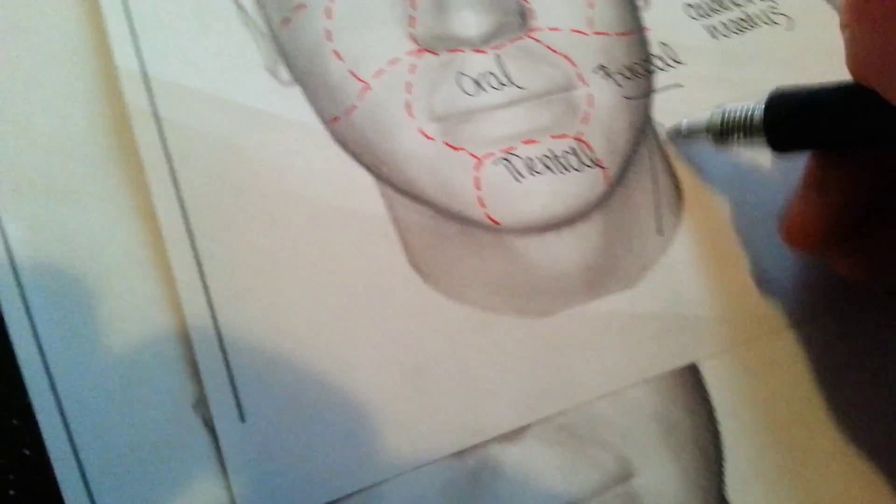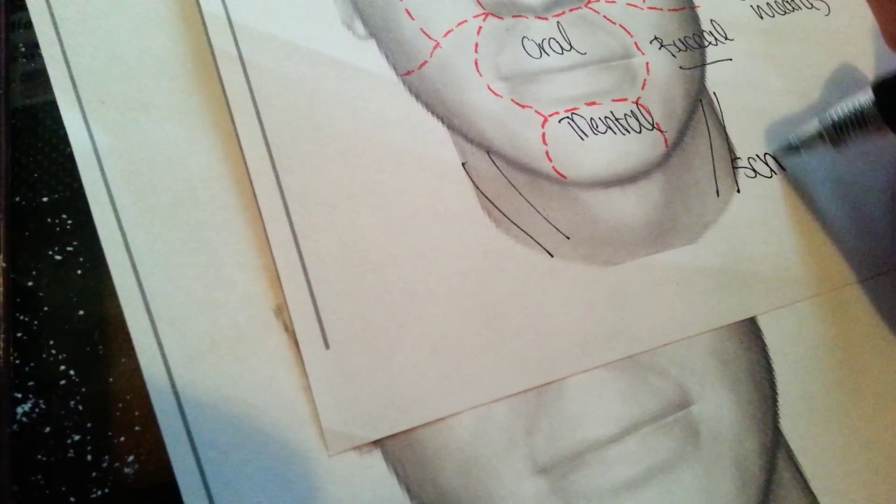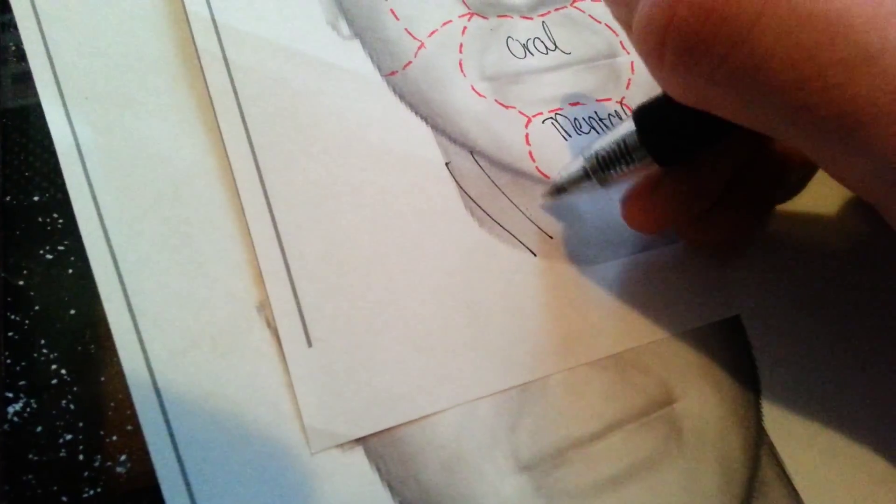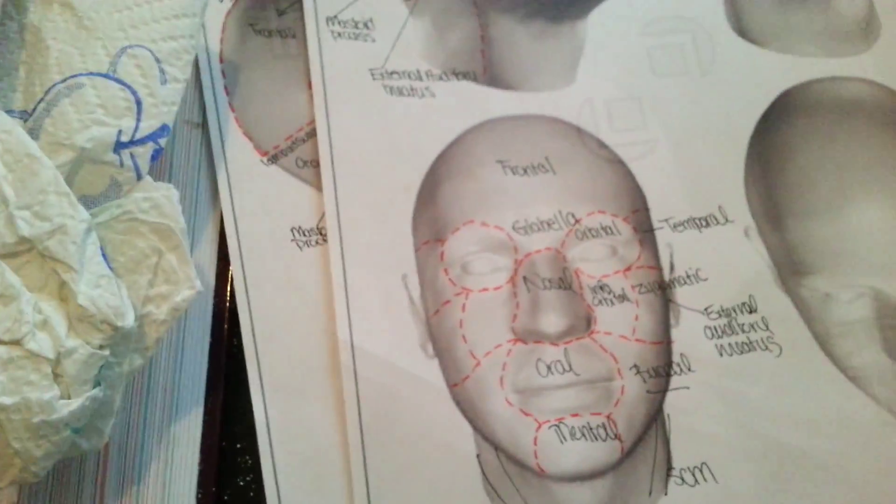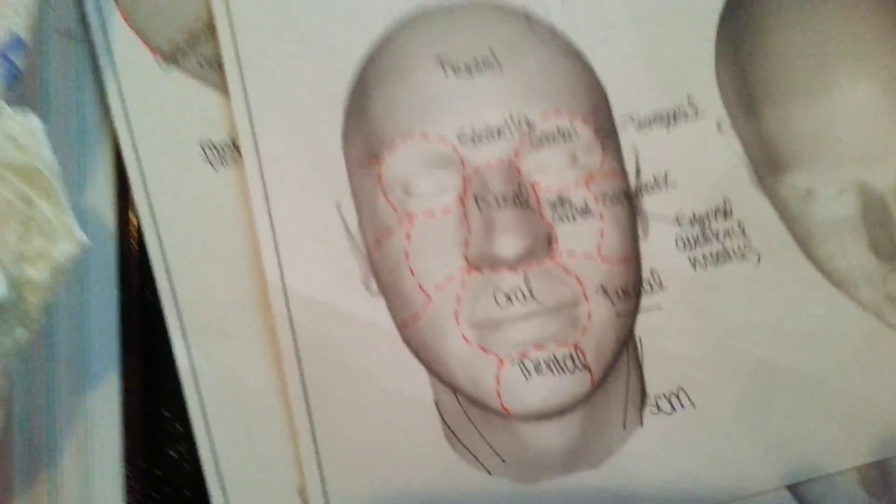And the SCM, the sternocleidomastoid, runs this way. SCM, and your platysmus is located in here. So that is the regions of the head and neck.